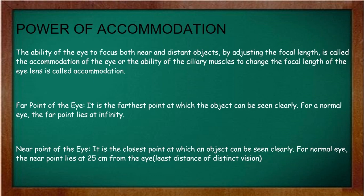Now, the power of accommodation. Our eye has the very good ability to focus on both near and distant objects by adjusting its focal length. This ability of the ciliary muscles to change the focal length of the eye lens is called accommodation.